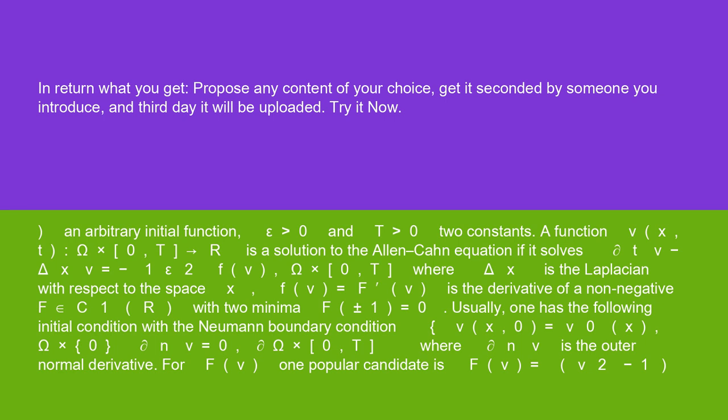Usually, one has the following initial condition with the Neumann boundary condition: v(x,0) = v₀(x) on Ω × {0}, and ∂ₙv = 0 on ∂Ω × [0,T],